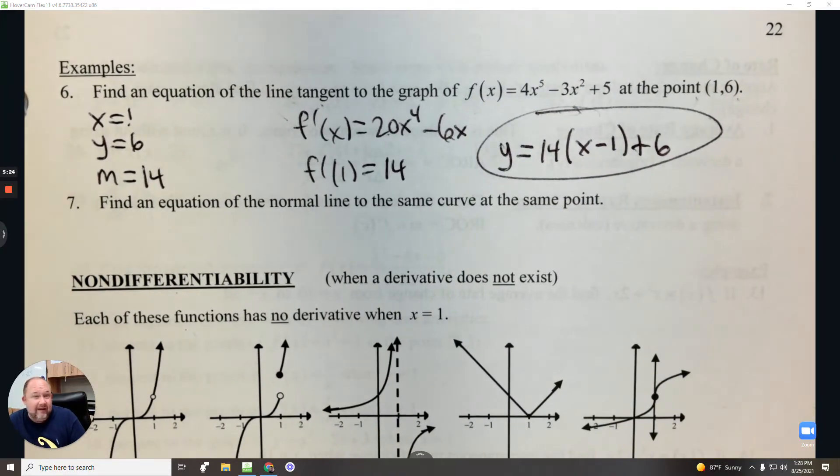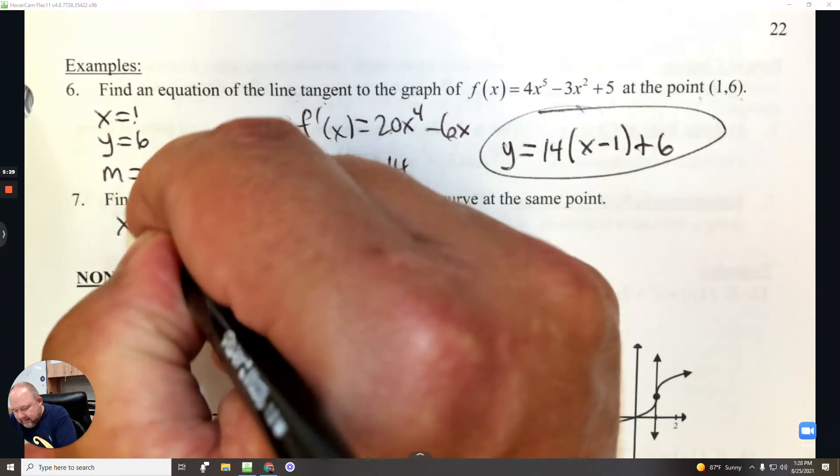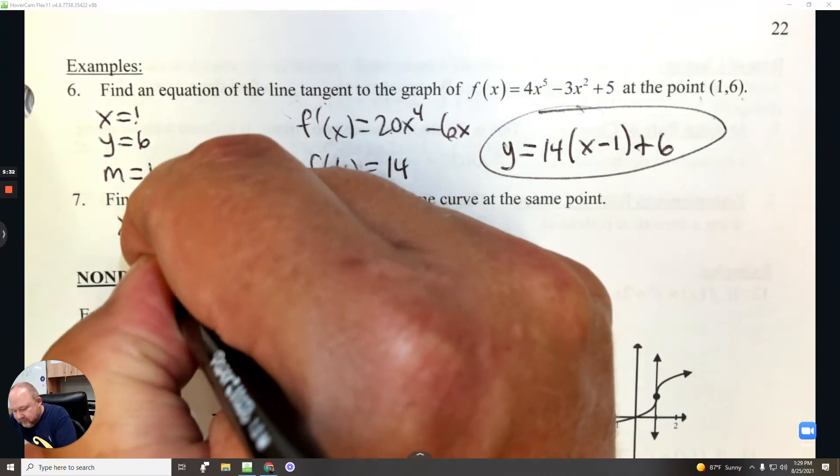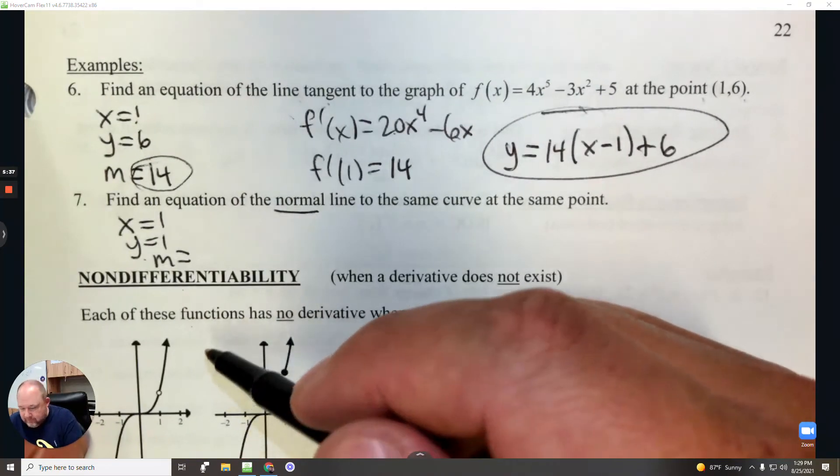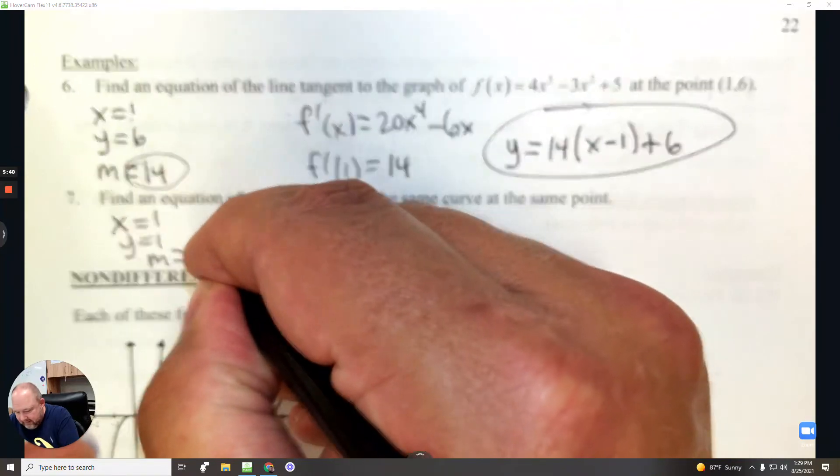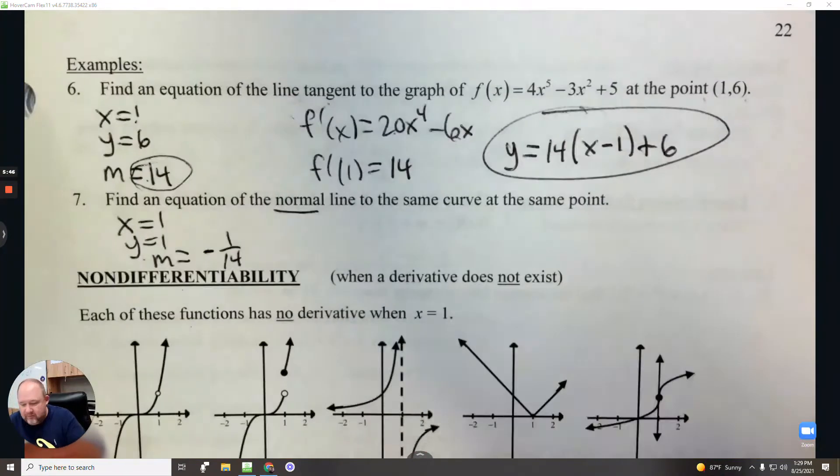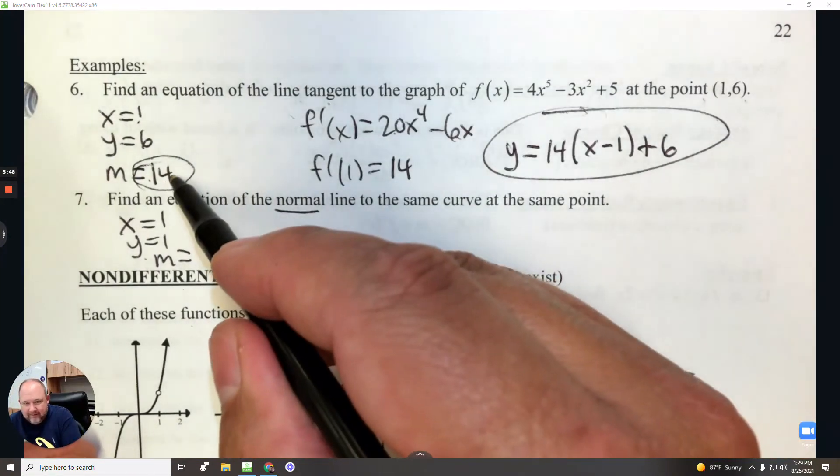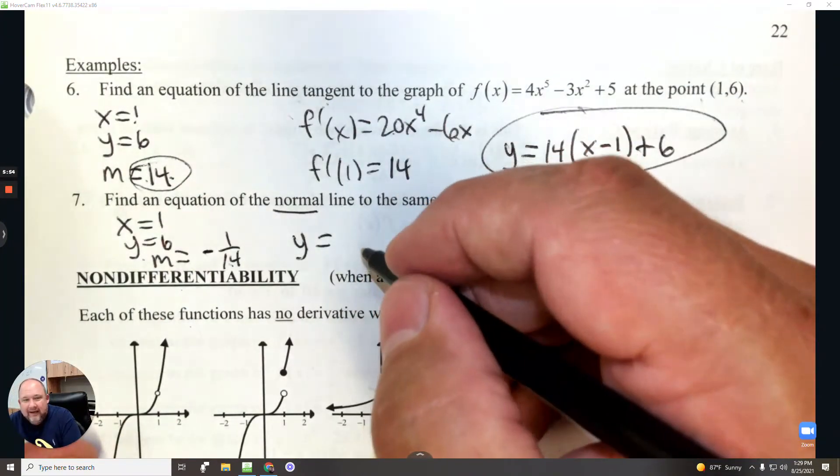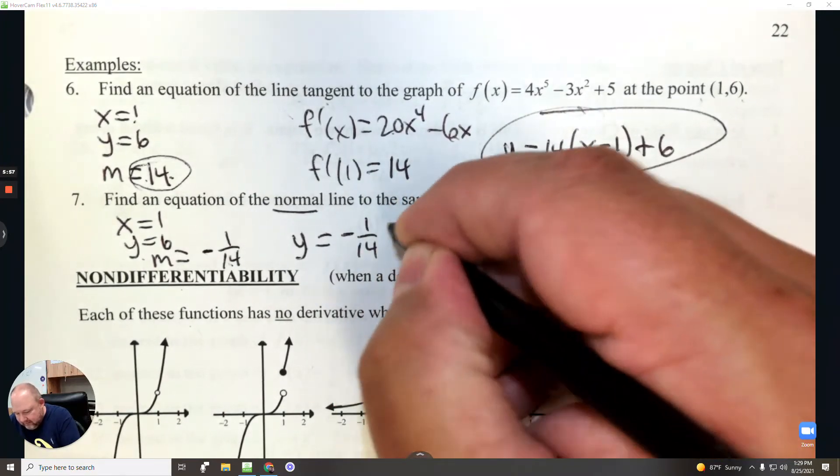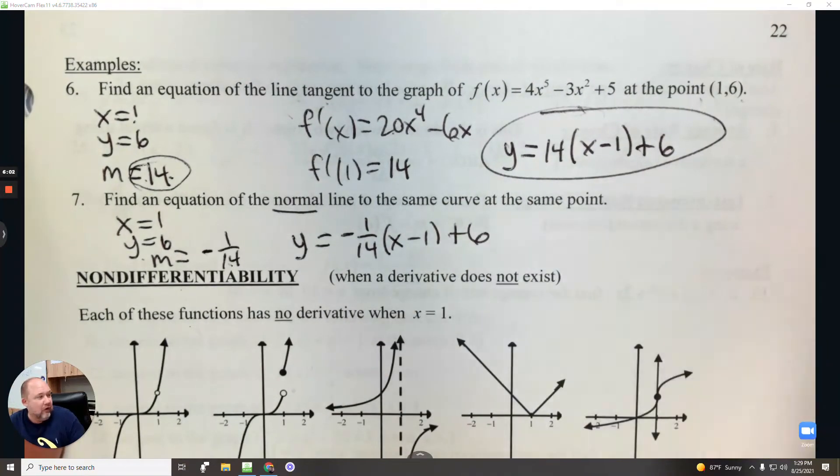For number 7, find an equation of the normal line at the same point. So x and y stay the same. But the slope, we need to do the perpendicular slope. So I need to do the opposite sign, which is negative, and then the reciprocal, which is 1 over 14. So negative 1 over 14, that slope is perpendicular to positive 14. And then everything else is the same. So it's y equals negative 1 over 14, x minus 1 plus 6.